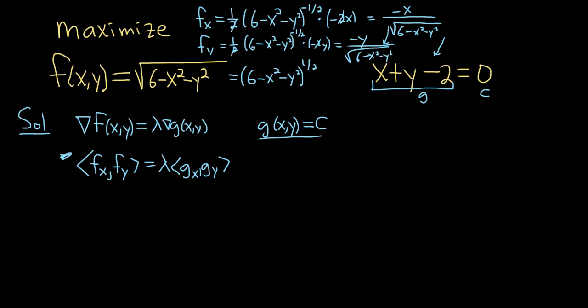Let's go ahead and fill it in down here. So we have angle bracket, negative x over square root 6 minus x squared minus y squared, and then comma, and same thing here. It's negative y over square root 6 minus x squared minus y squared. Then we have our bracket. And that's equal to lambda.